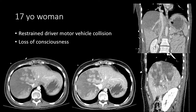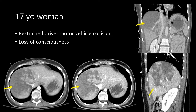Another 17-year-old woman was in a motor vehicle collision — this time wearing her seatbelt — also with loss of consciousness. We can see extensive injury to the right hemi-liver with poor perfusion and heterogeneity of almost the entire right hemi-liver, which we would consider parenchymal disruption. This injury extends right up to the intrahepatic IVC and involves both the middle hepatic vein and the right hepatic vein, visible in the middle of this parenchymal disruption.